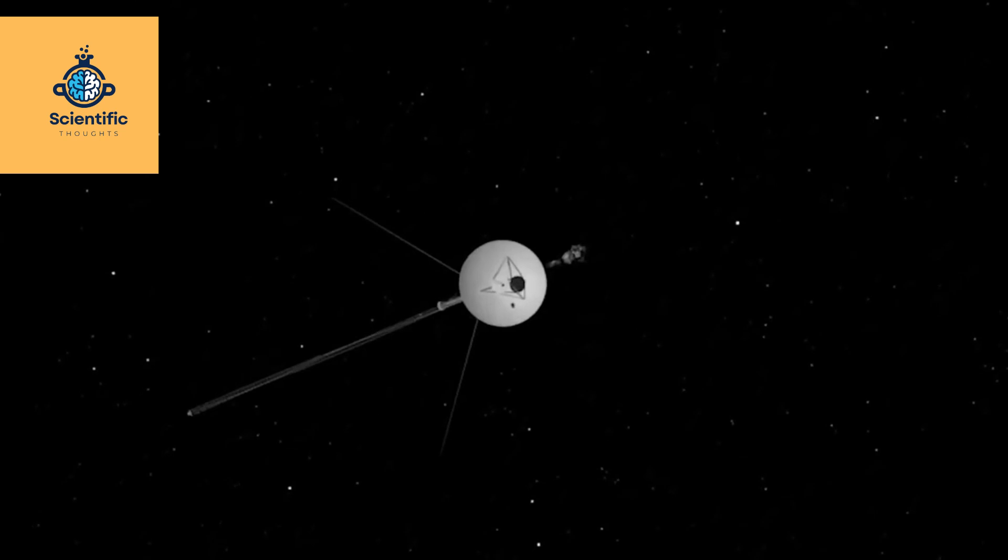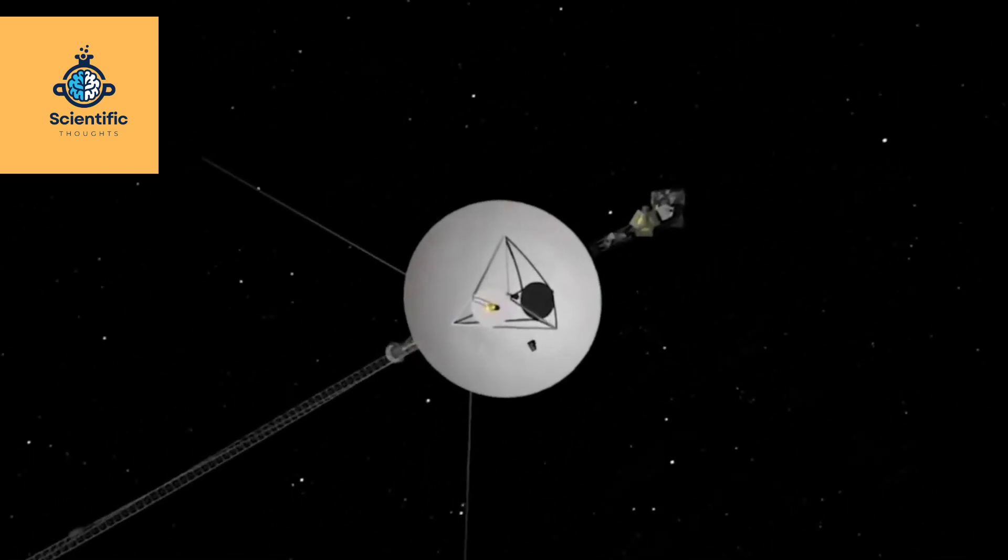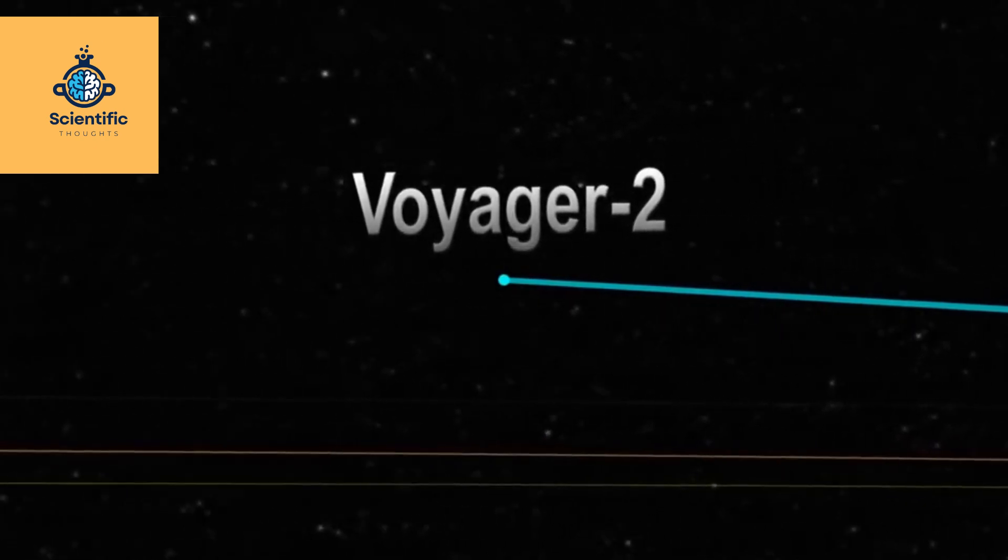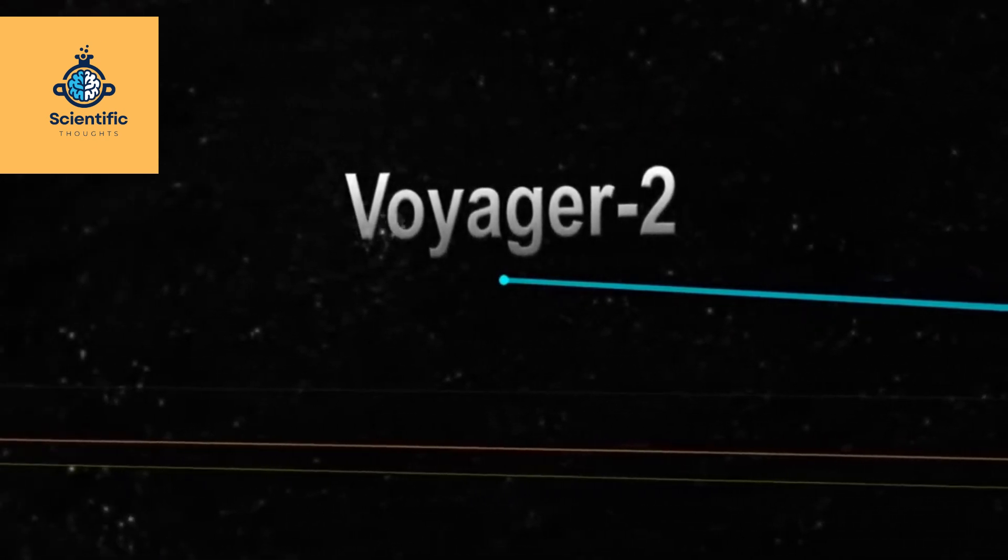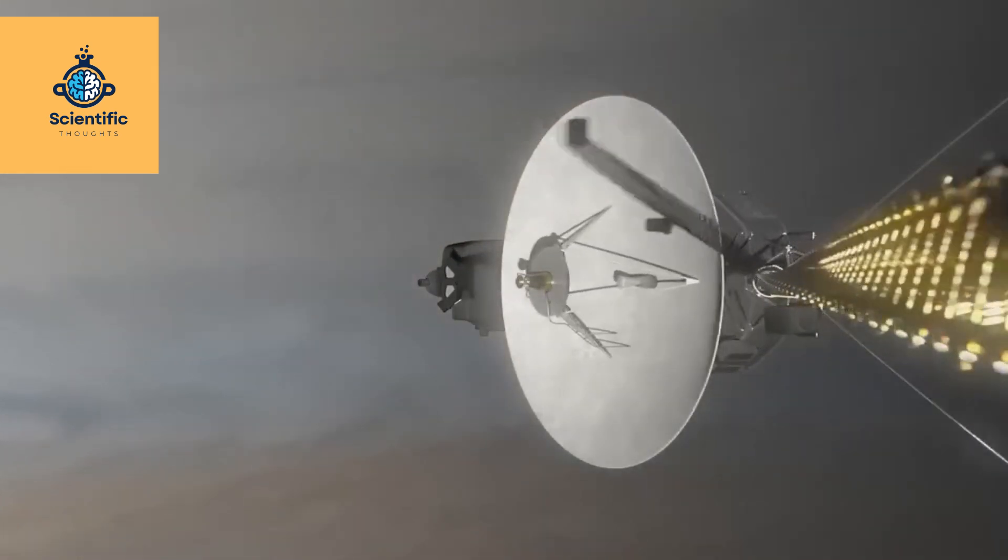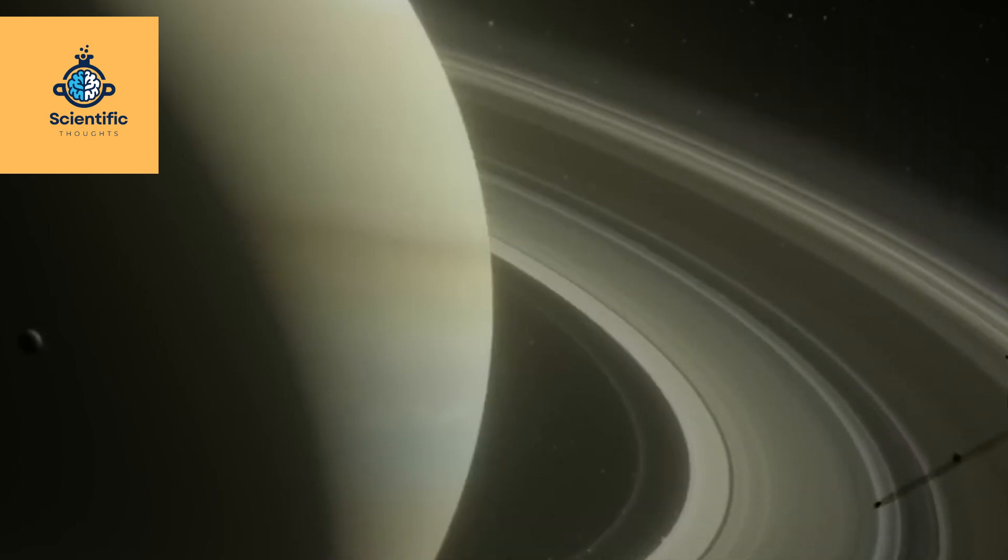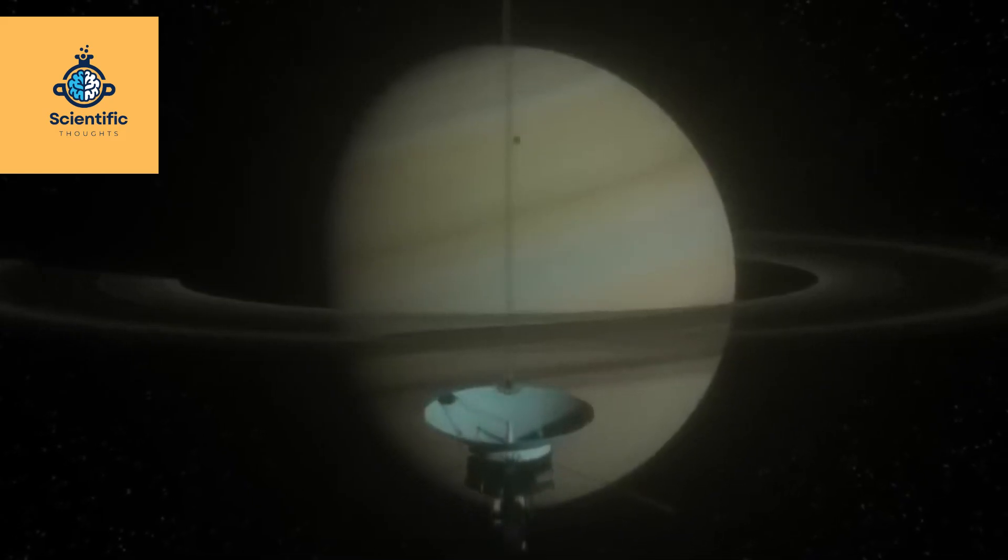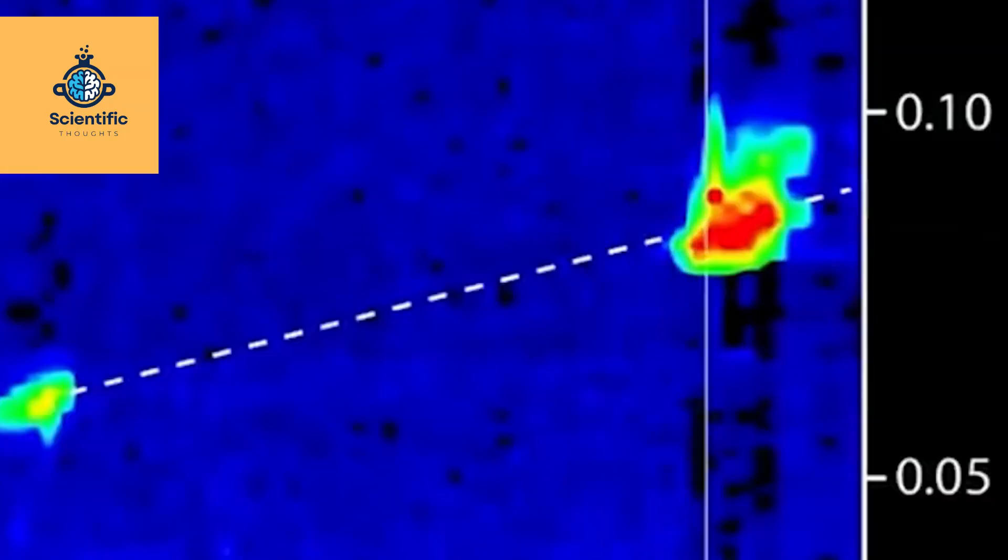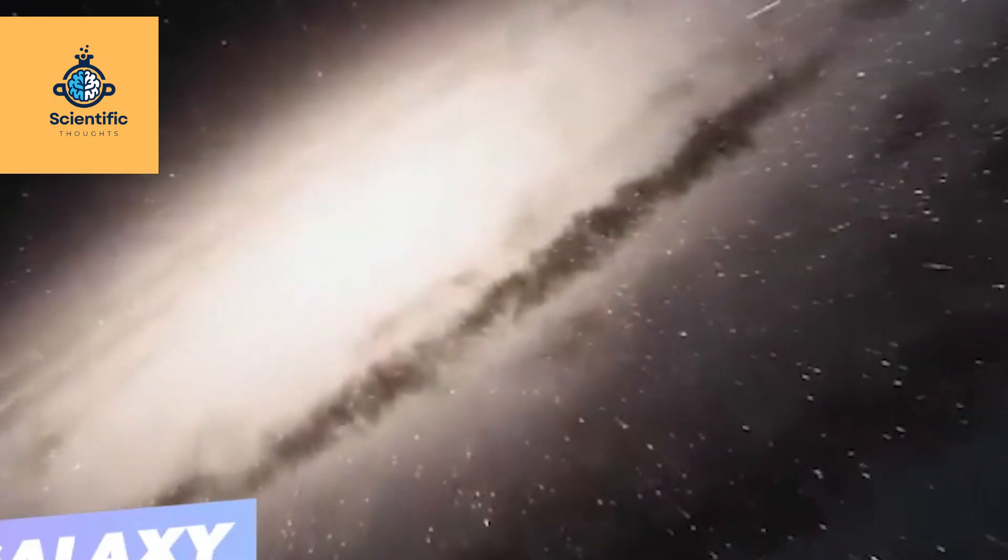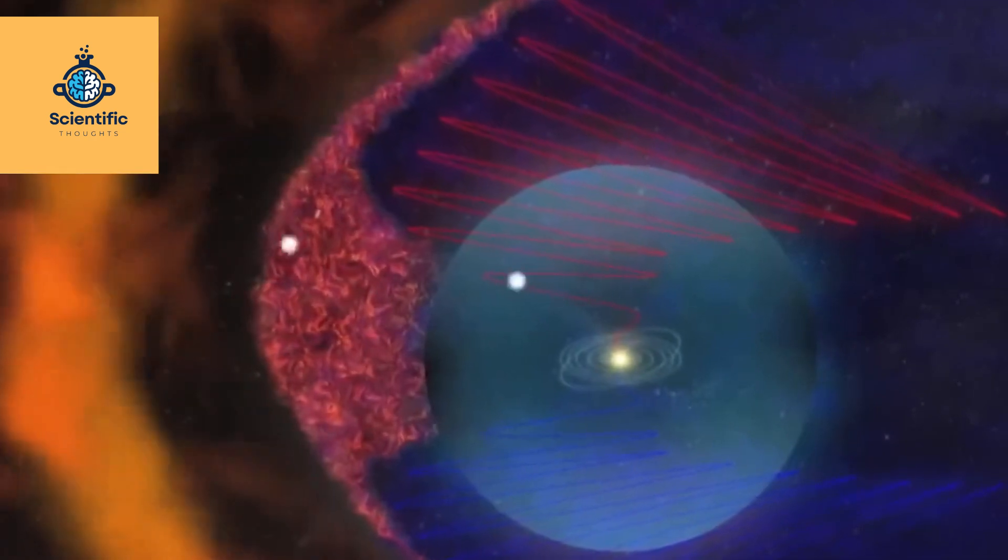Proxima b's discovery is a big step in exoplanet research. It's in the habitable zone where conditions for liquid water exist, raising hopes for finding life elsewhere in the universe. Understanding planets like Proxima b helps us grasp the possibilities of life beyond our solar system and the complexities of the universe. Proxima b, a beacon of possibility. Proxima b raises the exciting possibility that it could support life. This discovery challenges our understanding of planetary systems and makes us wonder how common Earth-like planets are in the universe.